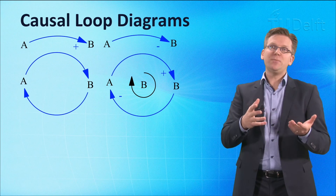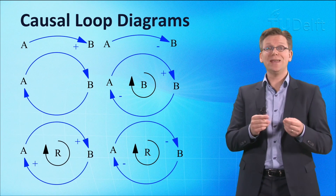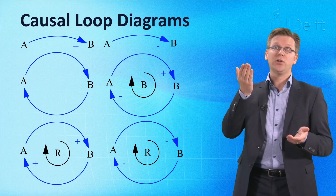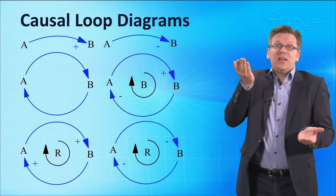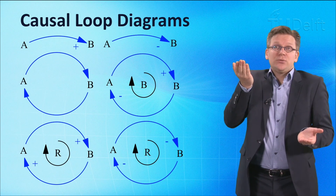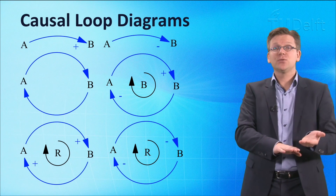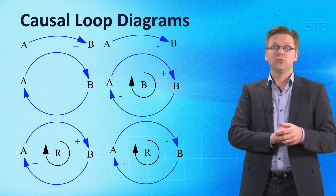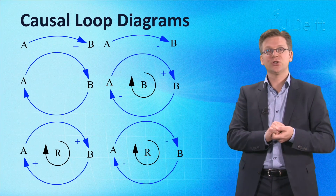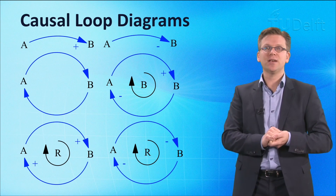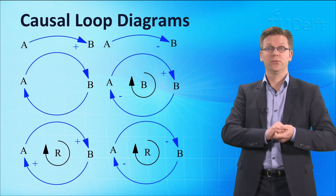A feedback loop is called a reinforcing loop if an initial increase in variable A leads after some time to an additional increase in A, and so on, and if an initial decrease in A leads to an additional decrease in A, and so on. In isolation, such reinforcing feedback loops generate reinforcing behavior — exponential behavior, for instance.